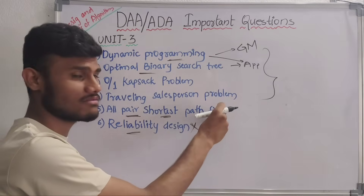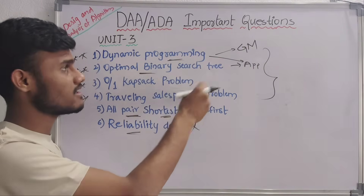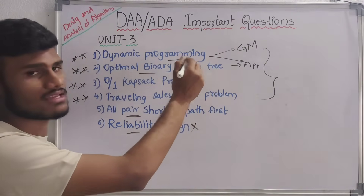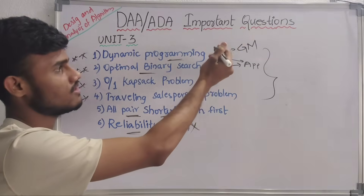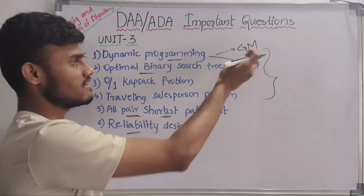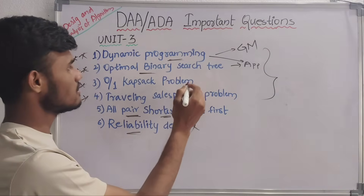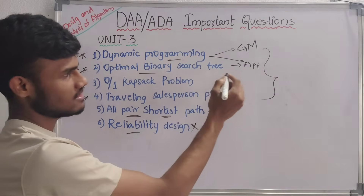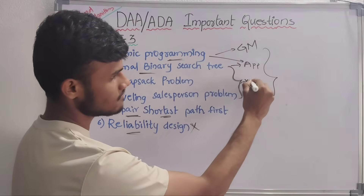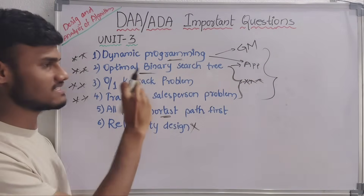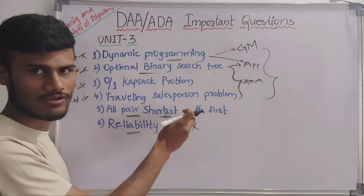If you have a choice, you have 4 questions. Dynamic programming is very easy to choose. There are 3 problems — these 3 questions are very important. Dynamic programming is very important, do not skip any questions.